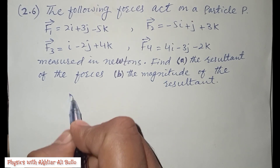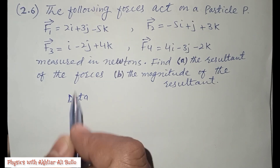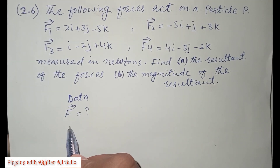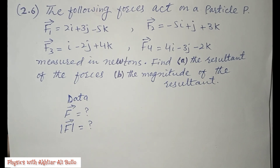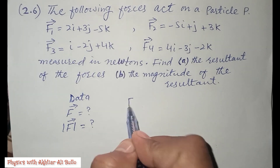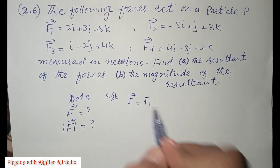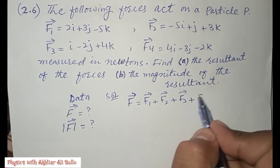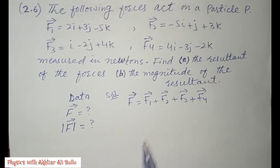First of all we will make a data. We have four forces and we have to find the resultant force, then we have to find the magnitude of the resultant. For the solution, to find the resultant we will add all the forces: F = F1 + F2 + F3 + F4.